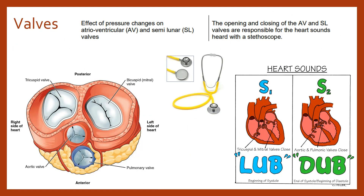The valves open and close purely due to the effect of those pressure changes. When the atria are full, the pressure will be high there and that will force open the AV valves. Then when the blood moves from the ventricles into the vessels, the semi-lunar valves will open when the pressure is higher in the ventricles to move into the arteries.